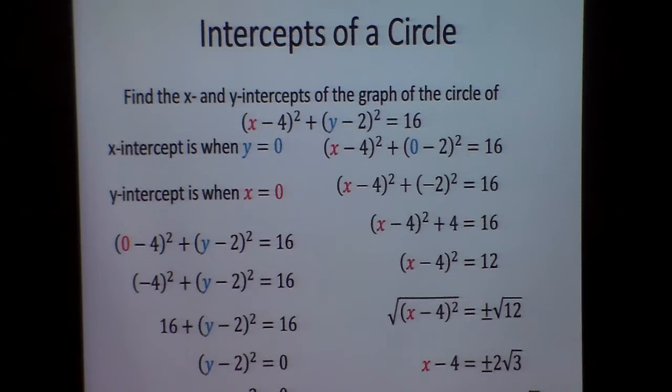So to find the intercepts, all we're really doing is this. We're taking the original formula. And if I want to find the x-intercept, I put 0 for y because on the x-intercept, the y value is 0. So I can just plug them in and get the answer.